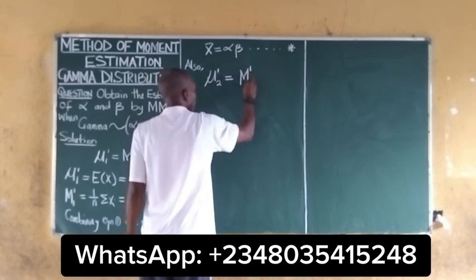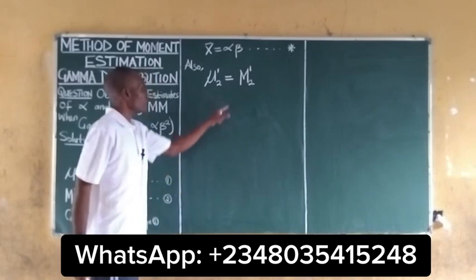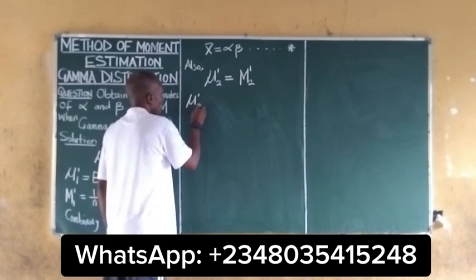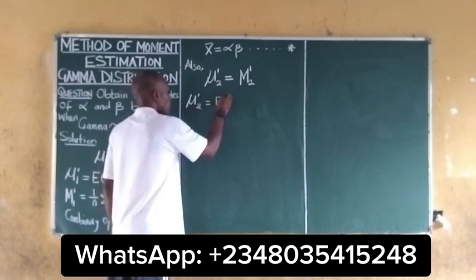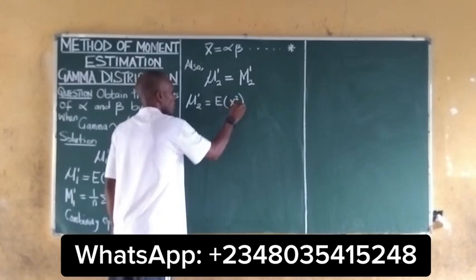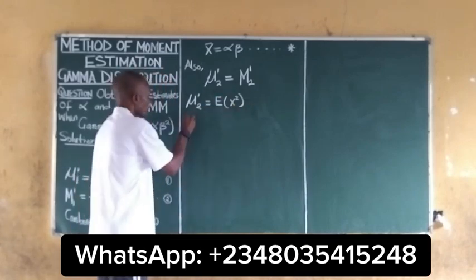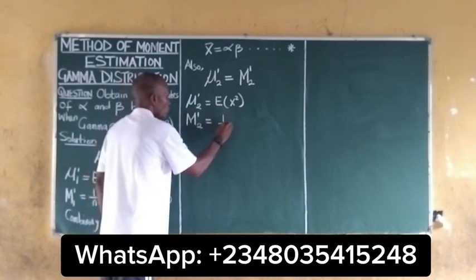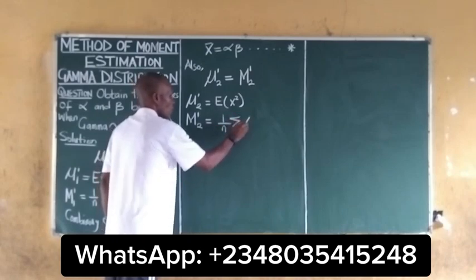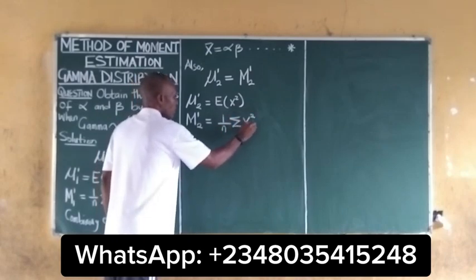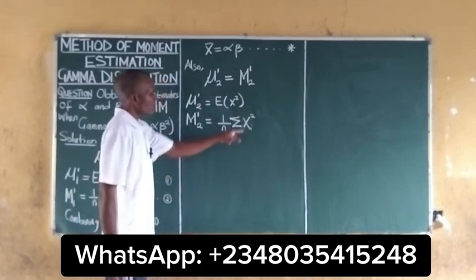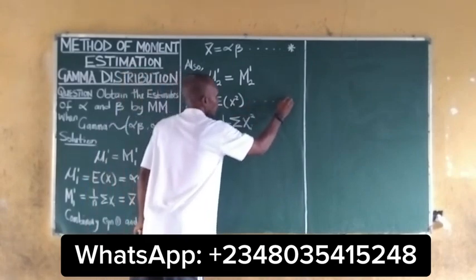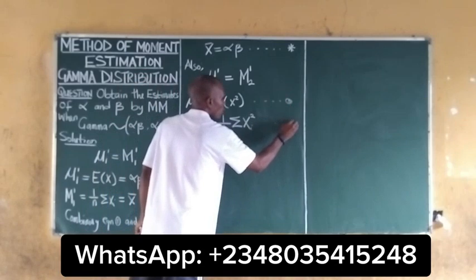For the second moment, the population mean is again equal to the sample mean. In this case the population second moment is equal to the expected value of X squared, while the sample second moment is equal to (1/n) times the summation of x_i squared. We take these as equation 3 and equation 4.